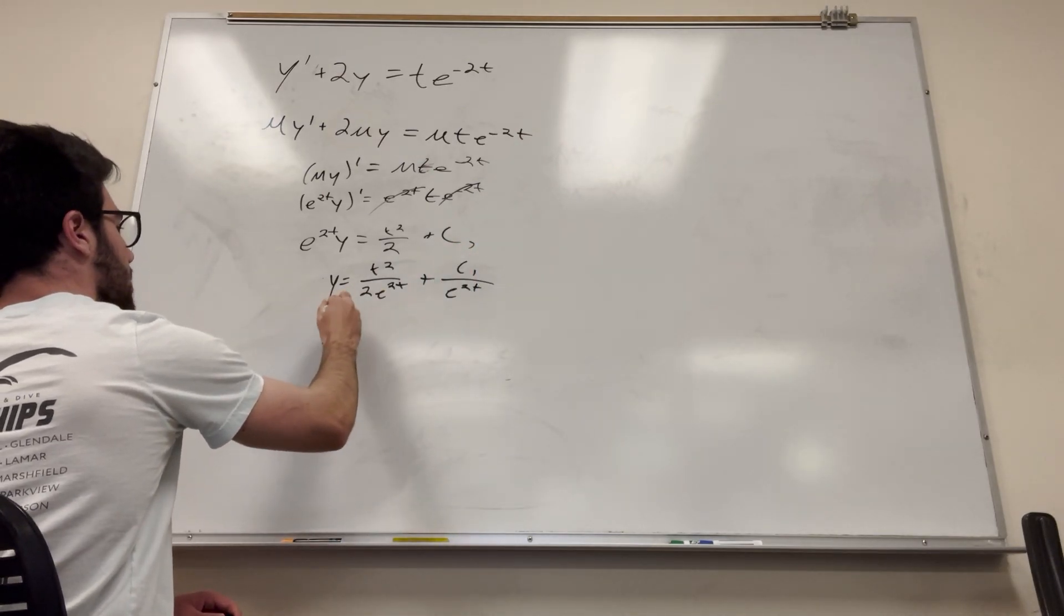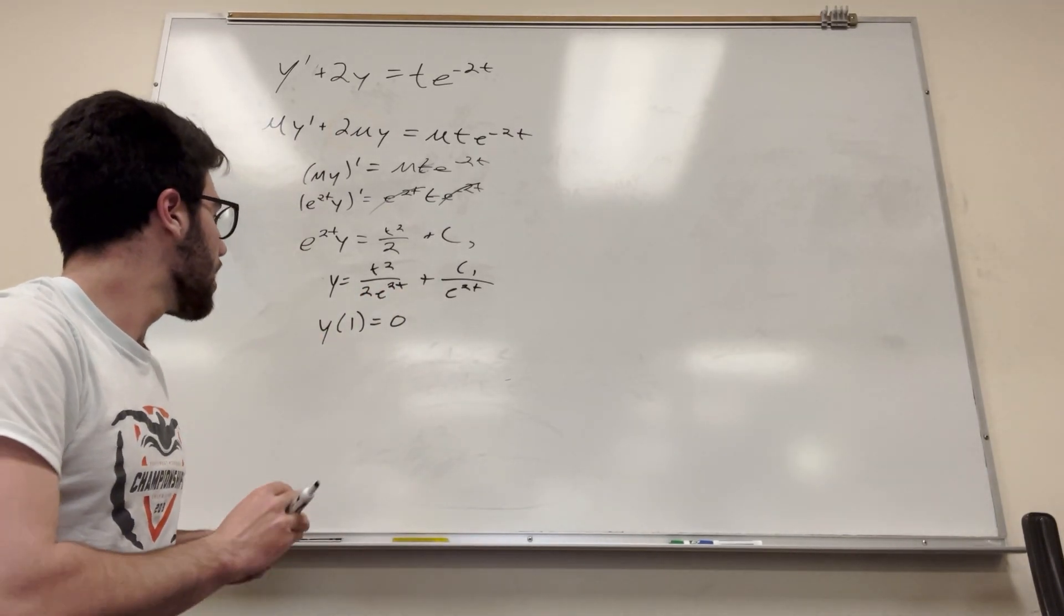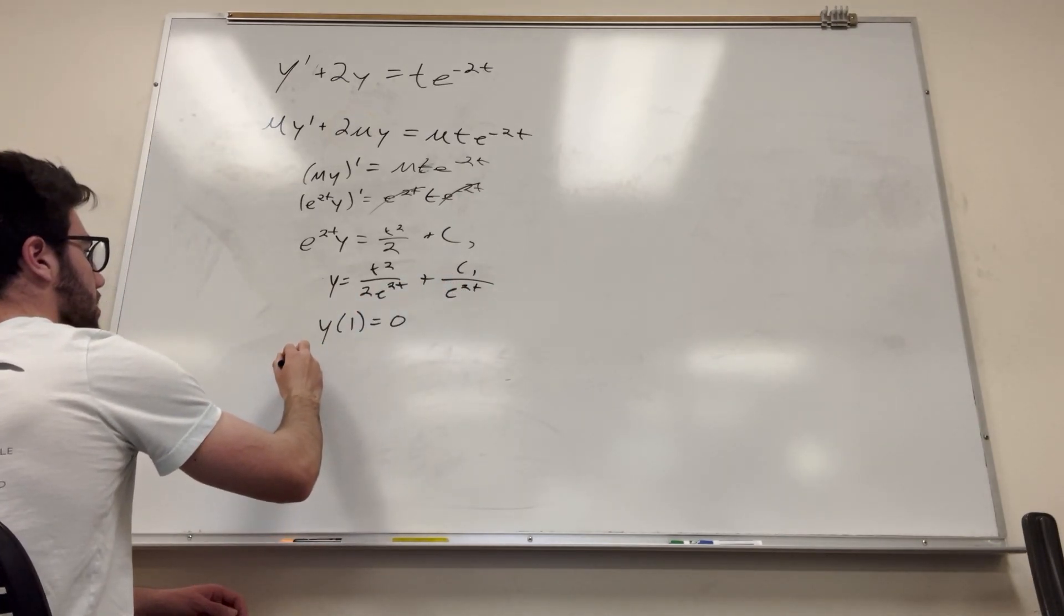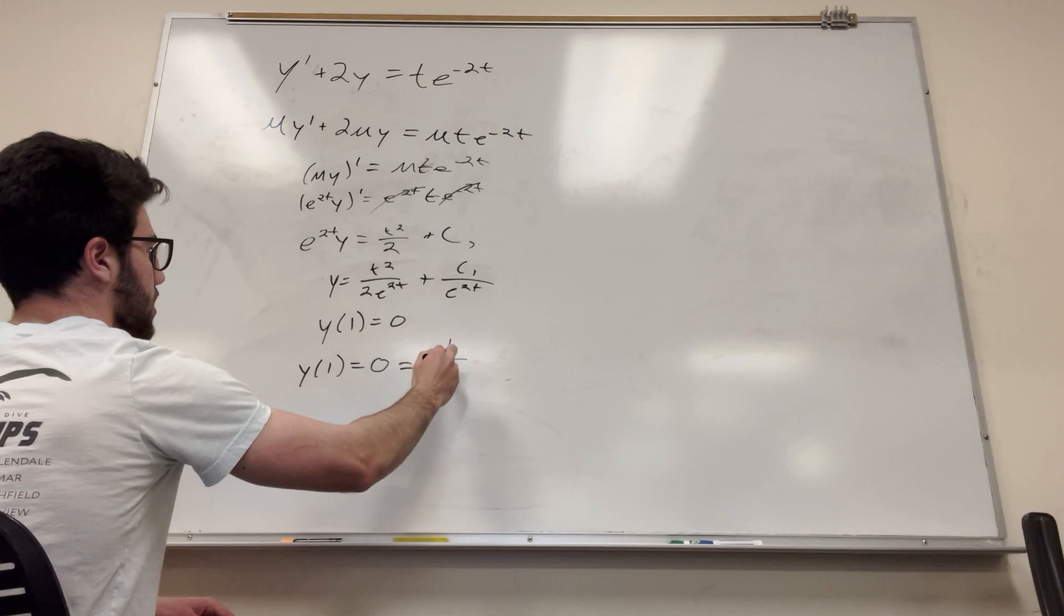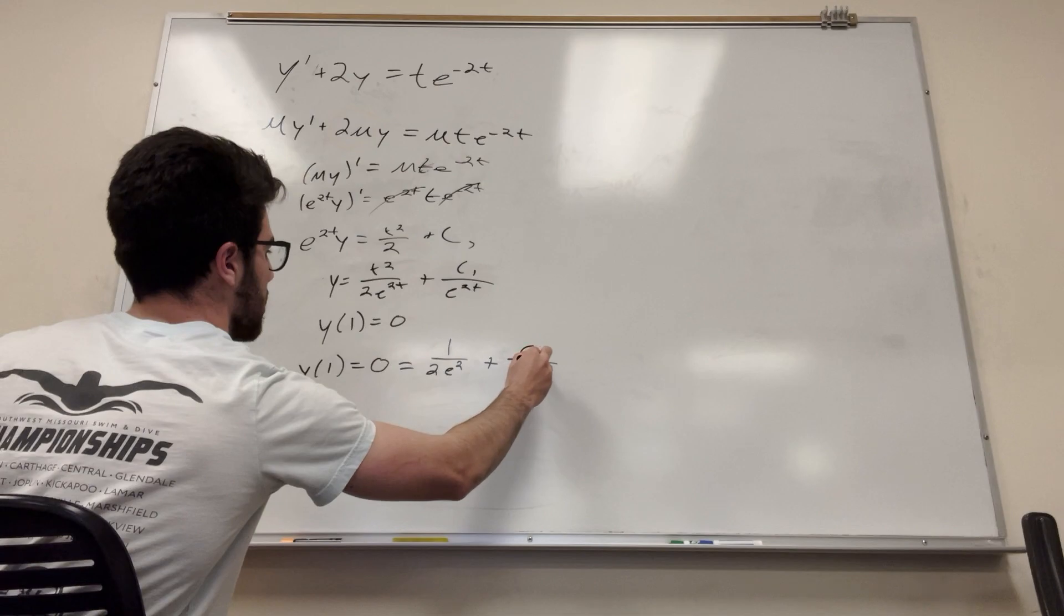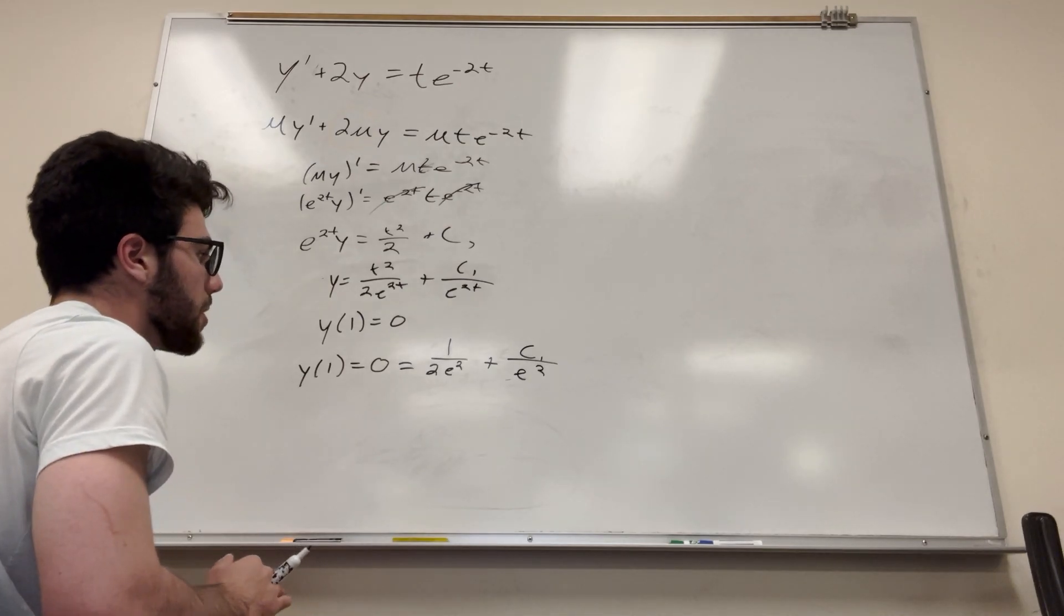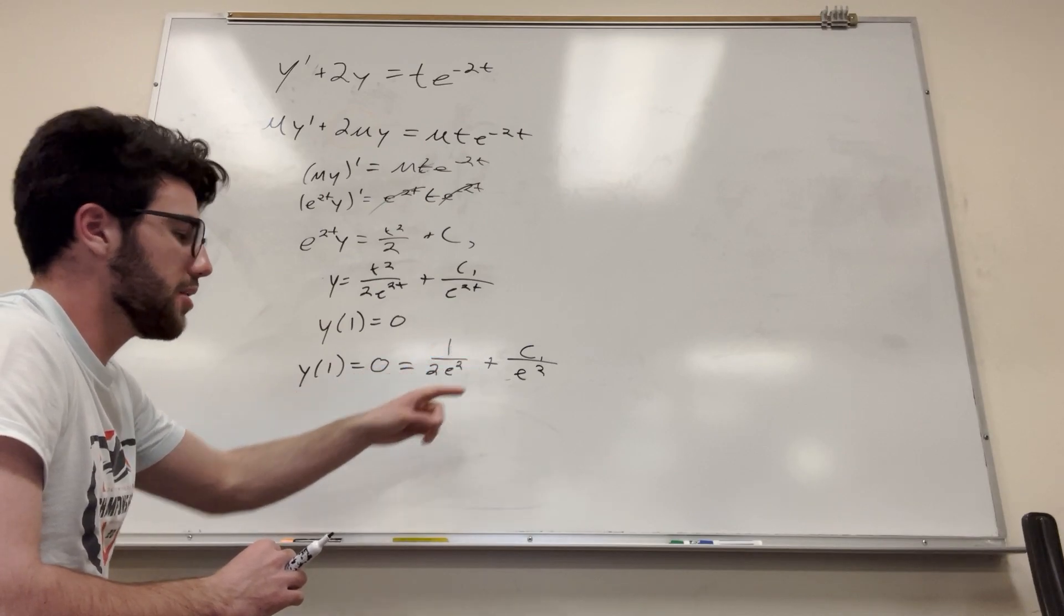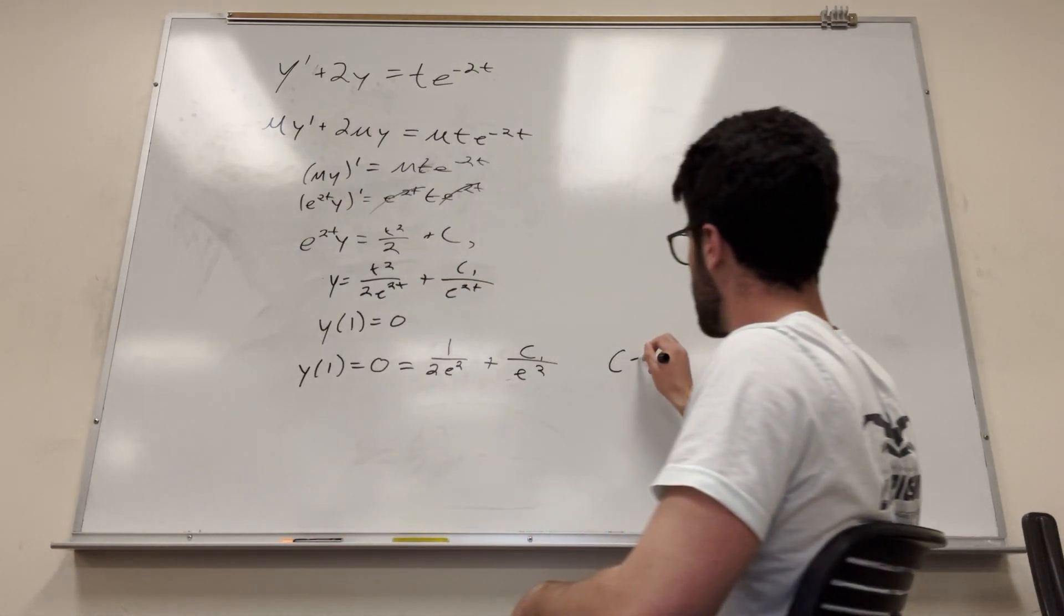And then our initial condition, y of 1 is equal to 0. Forgot to put that up there, but that's what we're solving for now. Let's figure it out. So to solve it, to find c is what we're doing here. So what we have is y of 1 is equal to 0, and that means that if you plug in 1, so you're going to get 1 over 2 e to the 2 plus c over e to the 2 is equal to 0. So what value of c is going to make this work? Well, if you plug in negative 1 half for c, it's going to be 1 over 2 e to the 2 minus 1 over 2 e to the 2, and that's going to make it 0. So perfect. That means that c is equal to negative 1 half.